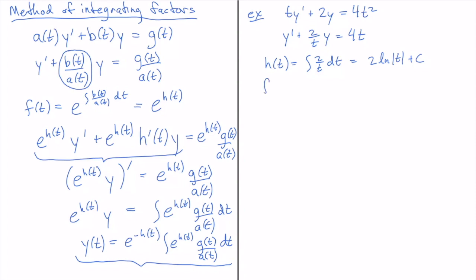So that is the h of t. From h of t we calculate the integrating factor. So f of t is going to be e to the 2 natural log of absolute value of t plus c.